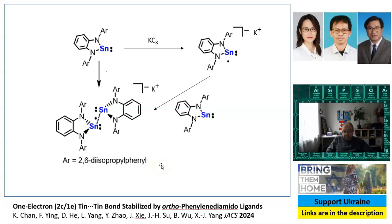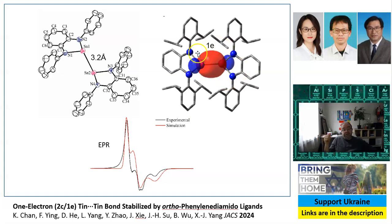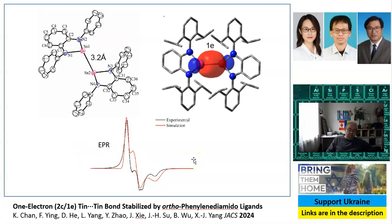That was proven to indeed be the structure by a few methods. The X-ray structure shows a very long bond, which indicates it's not a regular bond — because if the bond between the two tin atoms were made of two electrons, it would be much shorter. This is in fact the longest known single bond for tin-tin. Quantum mechanical calculations show that only one electron is actually located between the atoms, and this is the cloud it makes. Also, the molecule is paramagnetic, with an electron paramagnetic resonance signal that corresponds to what is expected for such a molecule.